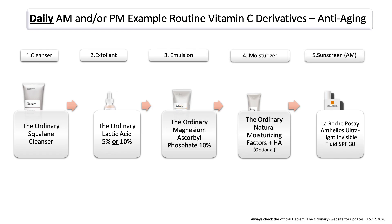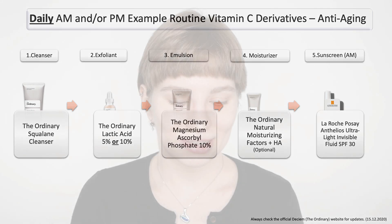For magnesium ascorbyl phosphate, which is currently out of stock, it's still important to know how to properly layer the different products. You would start with your cleanser, use lactic acid, then use The Ordinary magnesium ascorbyl phosphate emulsion afterwards, and then using a moisturizer is optional. However, using sunscreen in the morning is not optional, so please keep this in mind.